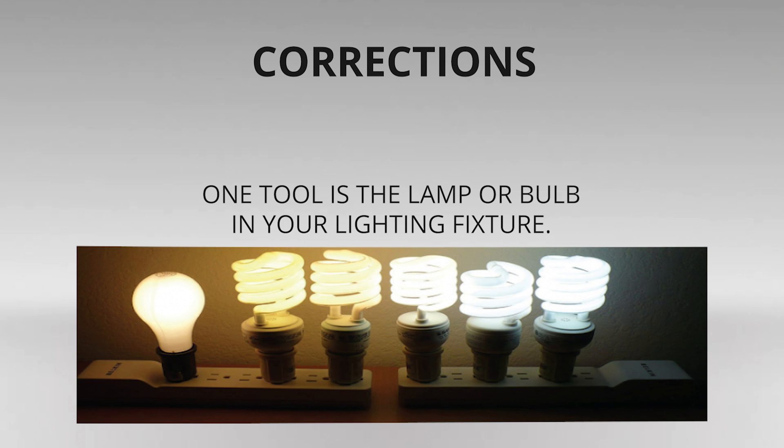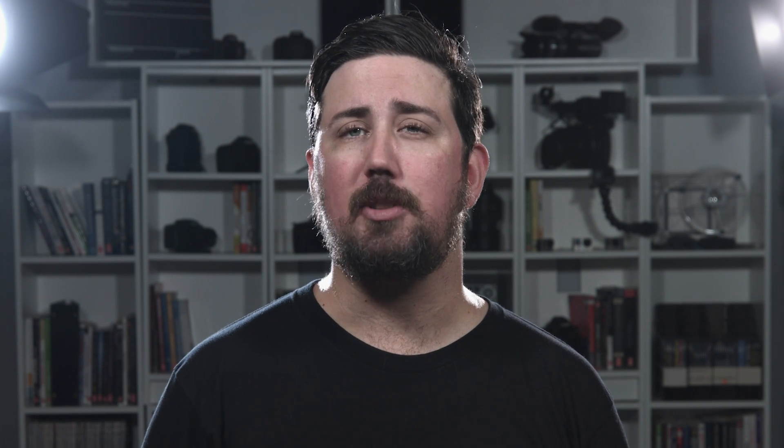One tool is the lamp or bulb in your lighting fixture. A trip to your local hardware store will reveal a wide variety of choices in fluorescent tubes and even common house lamp bulbs. Another basic correction is the gel — a few sheets of gel on hand can be a game changer. Place these thin sheets in front of your light to instantly change the color temperature. If you have a light that gets very hot, make sure the gel is away from direct heat because they will melt. Large sheets of gel are also available to cover an entire window if that's what you need.